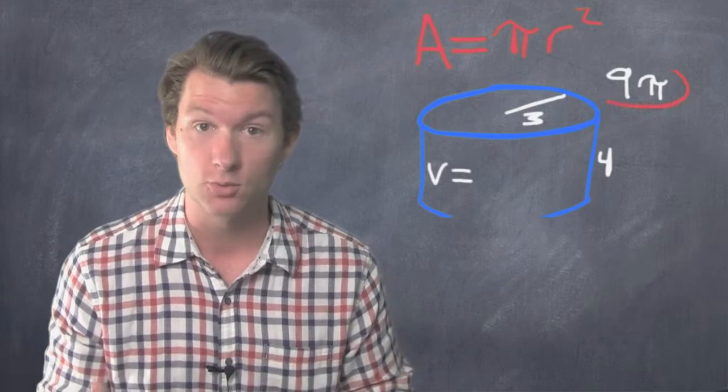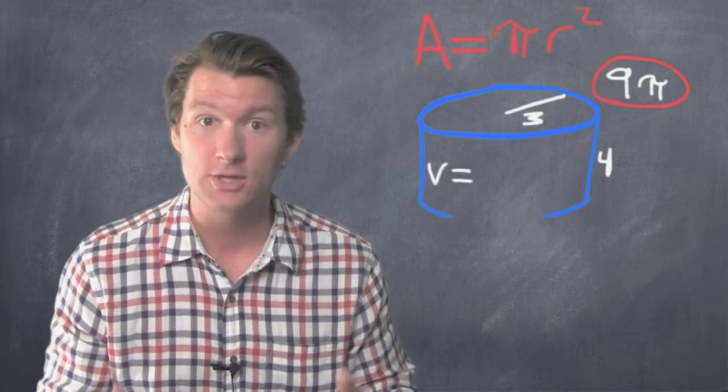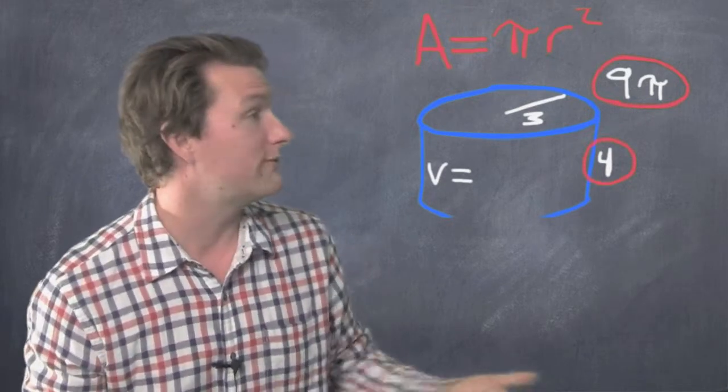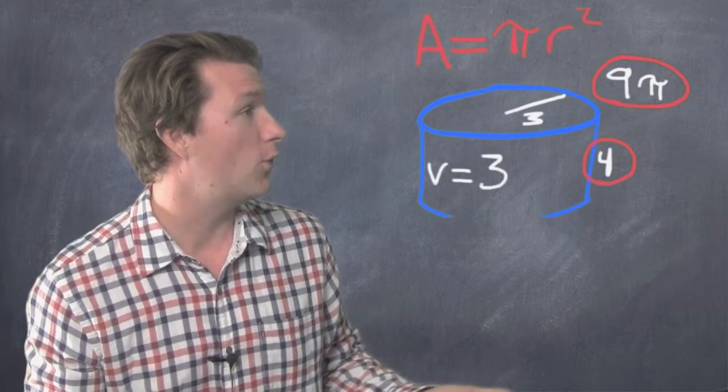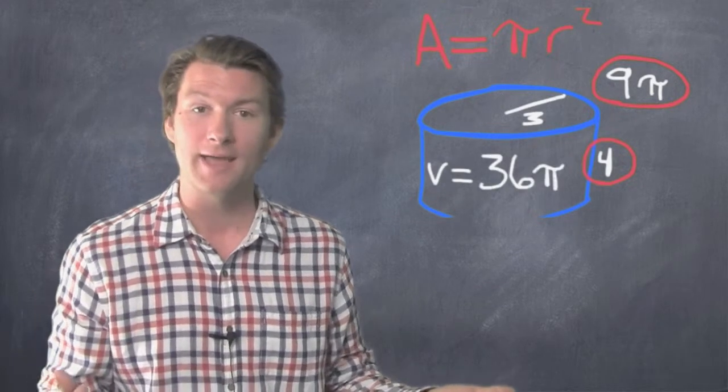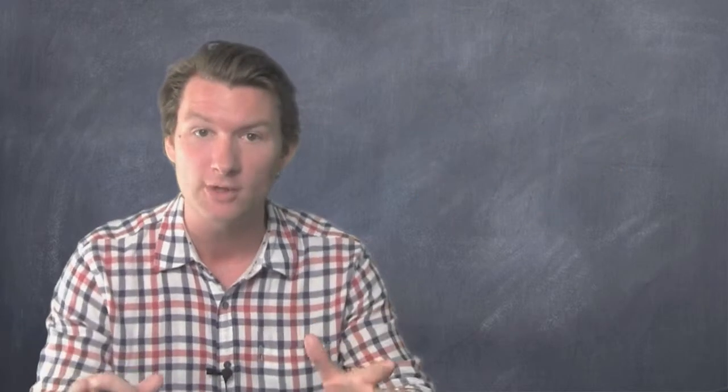Well, we take that area of the circle, which we already know is nine pi. We just multiply it by the height, which would be four. So nine pi times four would be 36 pi. That's how you find the volume of a cylinder. Let me give you one more example.